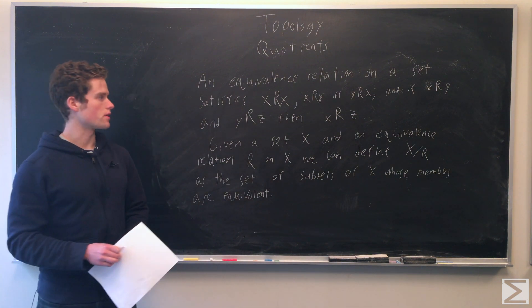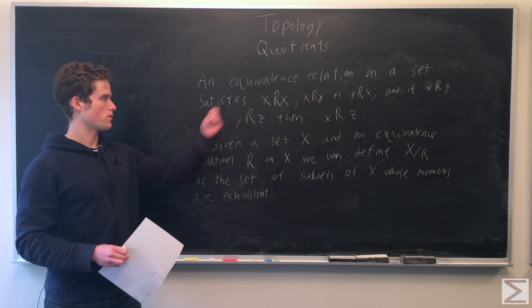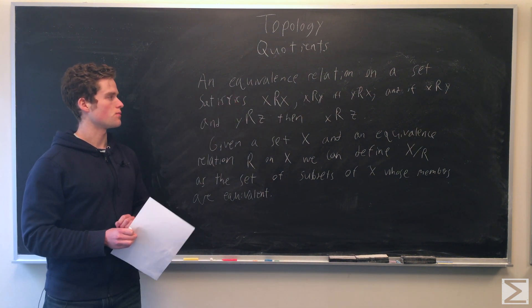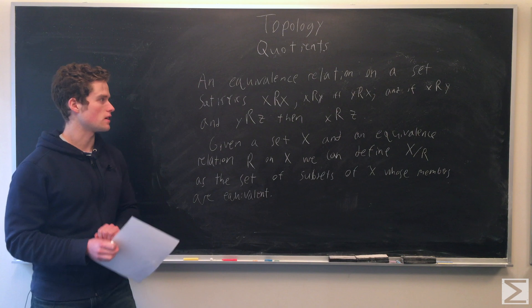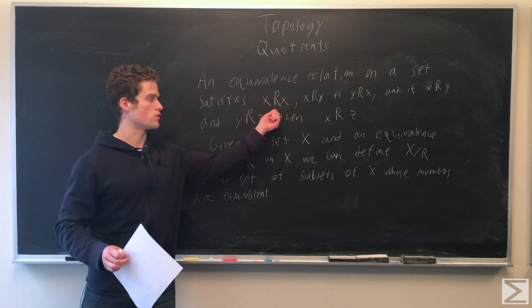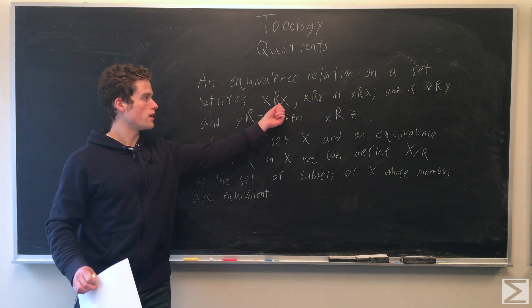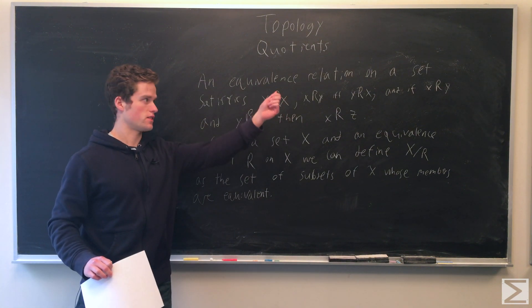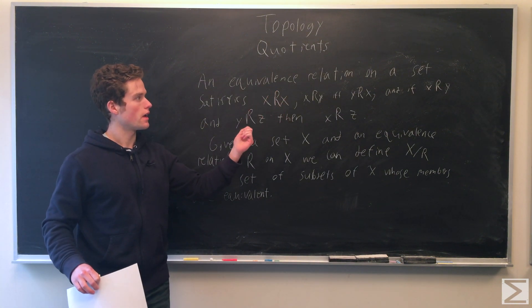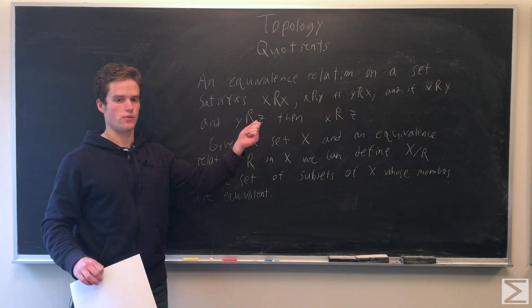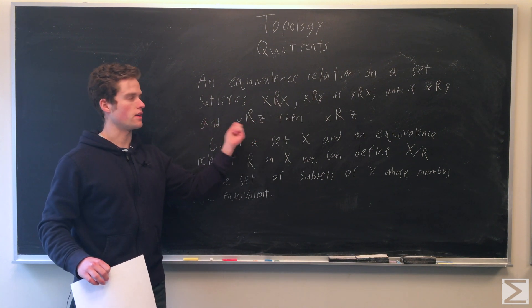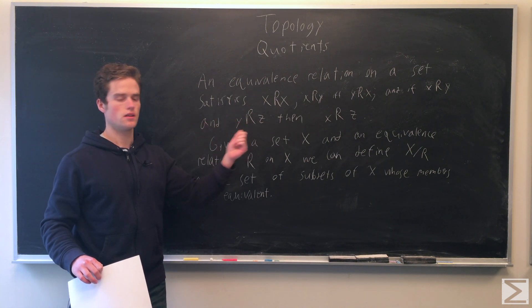So a common concept in math is an equivalence relation. It's a relation that satisfies: X is related to itself; if X is related to Y, then Y is related to X; and if X is related to Y and Y is related to Z, then X is related to Z.